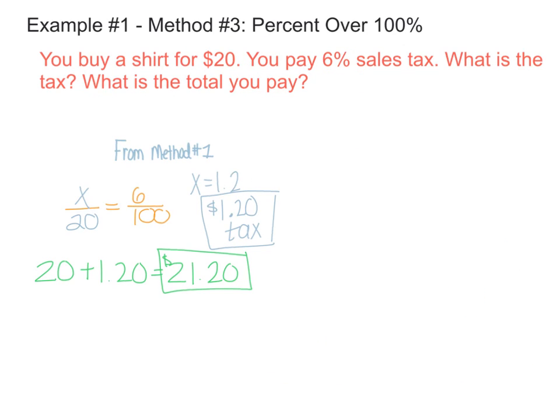Alright, our third method is one that's pretty new to people. And some of you might be a little confused by this, but others are going to love this method. So what I did was I just copied down what we had here from the first method, where we set up a proportion. And so if you recall, we set up our proportion to figure out 6% of $20 and that gave us our sales tax. And then to figure out the total we paid, we had to add this original amount plus the tax to get our after-tax total.